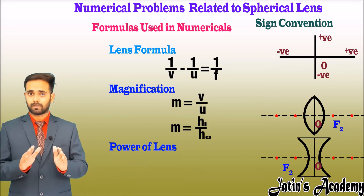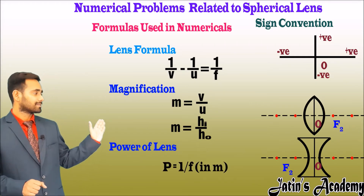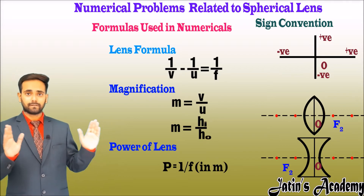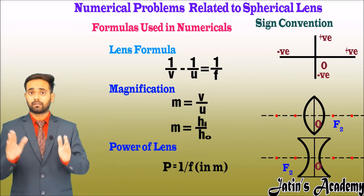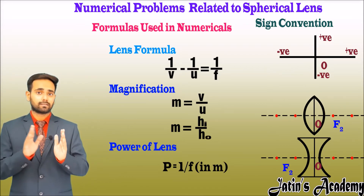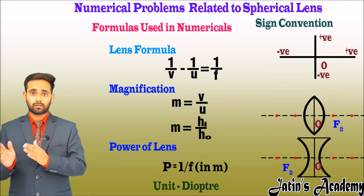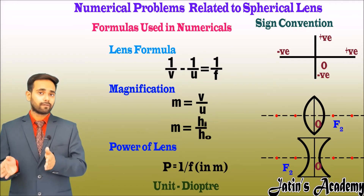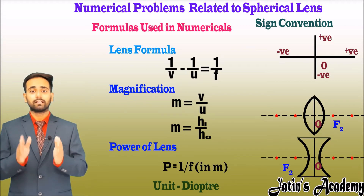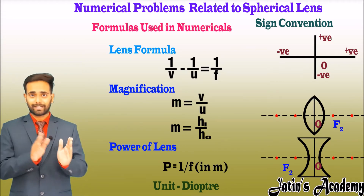Another important formula is the power of a lens: P = 1/f, where f is in meters. Units are important — power is given in diopters, and when finding focal length from power, the result is in meters, which must then be converted to centimeters as required by the question.